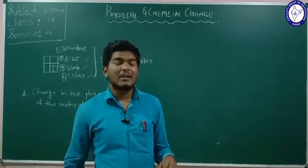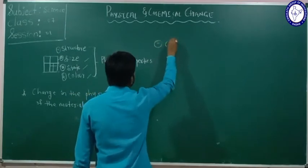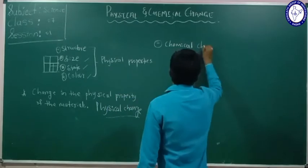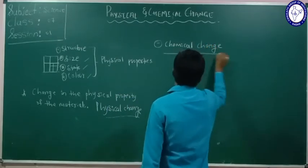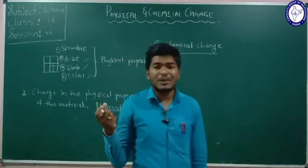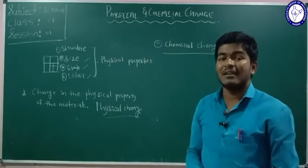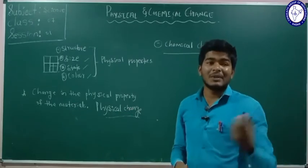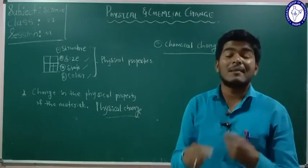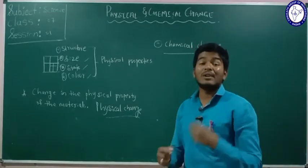Now we are going to study another type of change — that is chemical change. It is now familiar what is meant by physical change. Now we will study what is meant by chemical change. You are familiar with the rusting of iron — when you place iron in an open area, the iron reacts with the oxygen and water present in the air and it becomes rusted.